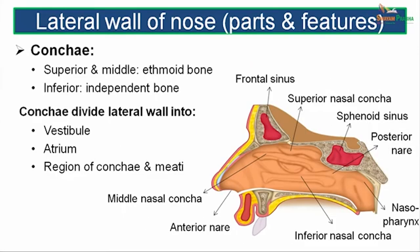The lateral wall of the nose has three curved bony projections known as the concae. The superior and middle concae are parts of the labyrinth of the ethmoid bone, while the inferior nasal conca is an independent bone. These concae divide the lateral wall into three parts: the vestibule, the atrium, and the region of concae and meati.